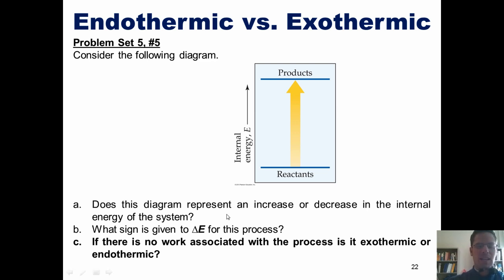Does this diagram represent an increase or decrease in the internal energy of the system? As we look at it, we can see that going from reactants to products, the products are at a higher energy level than the reactants. Thus, the internal energy, as indicated here on the y-axis, has increased.